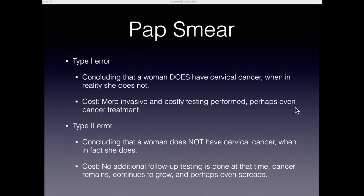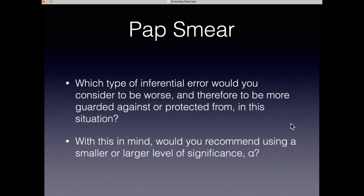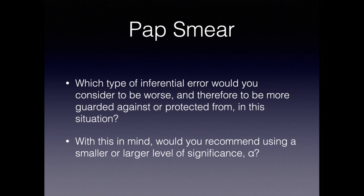Once we've identified the two types of errors and their potential costs — and when we say costs, we're really talking about undesirable outcomes — there are costs associated with each, and those costs vary. The question is: which type of inferential error would you consider to be worse, and therefore more guarded against in this situation?